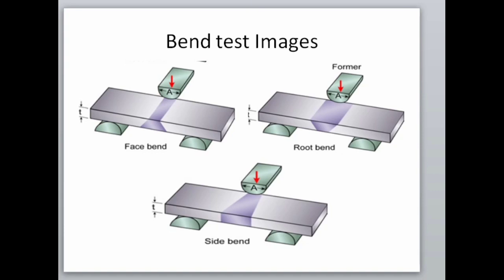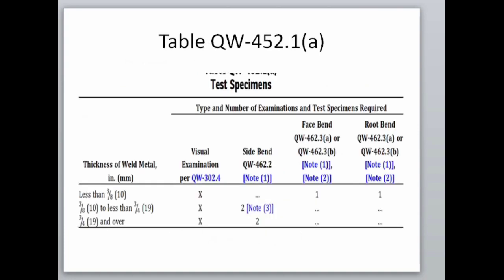Next, we look at how many bend specimens and what kind of bend testing need to be performed for a particular thickness of weld metal. We have to go to table QW452.1a, which gives the relationship among the thickness of weld metal, types of bend testing, and number of test coupons required for positions such as 1G, 2G, 3G, 4G in plates and 1G, 2G in pipes. If the thickness of weld metal is less than 10 mm, the required bend testing method is face and root bend, and the number of test coupons required is 1 each.